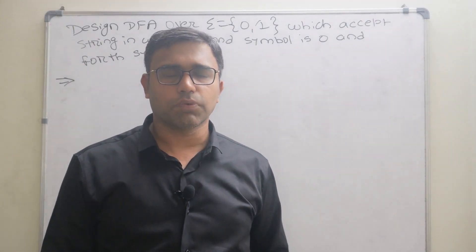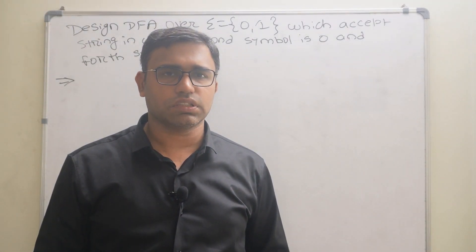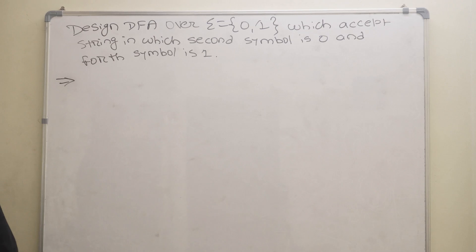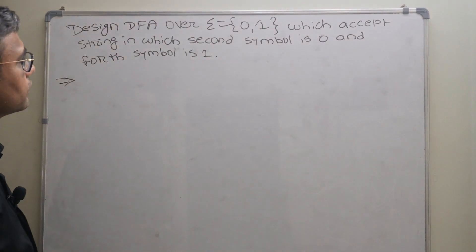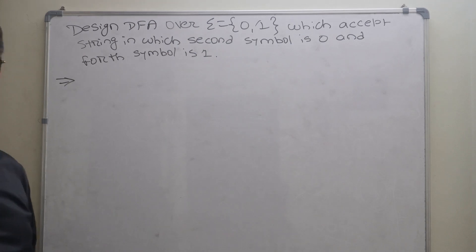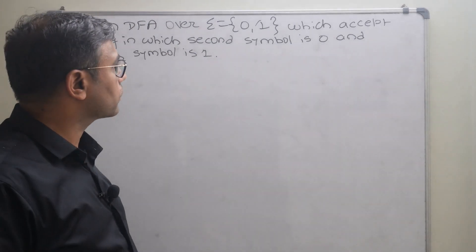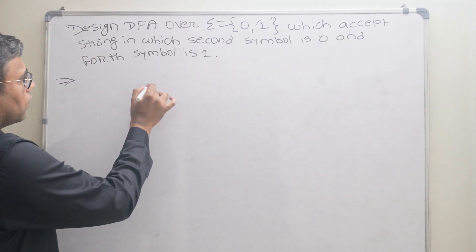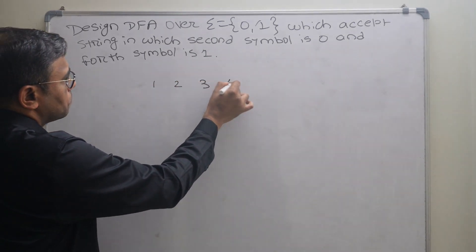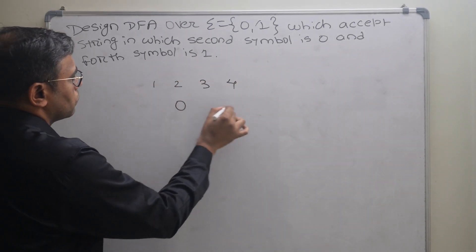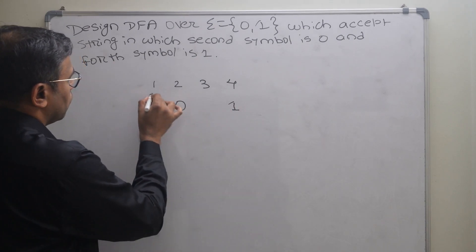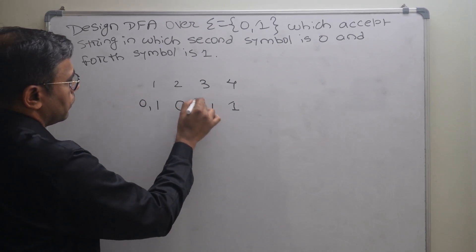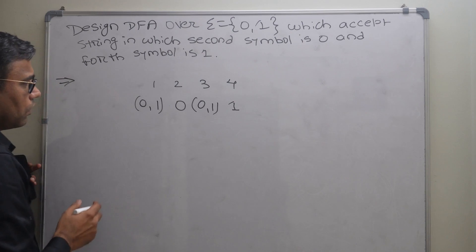Hello friends, the topic of this video is construction of deterministic finite automata. We have to design the DFA over input symbols which accepts strings in which the second symbol is 0 and the fourth symbol is 1. This means the minimum length of the string should be 4. The first symbol can be either 0 or 1, so positions are 1, 2, 3, 4. The second symbol should be 0, the fourth symbol should be 1, and the first and third symbols can be from {0, 1}.